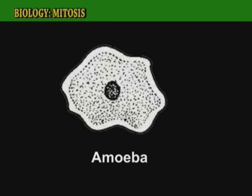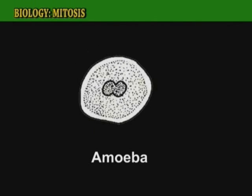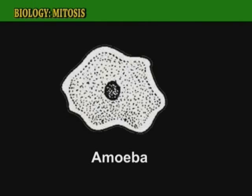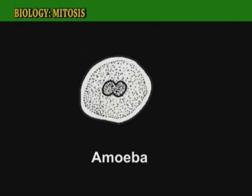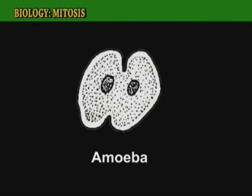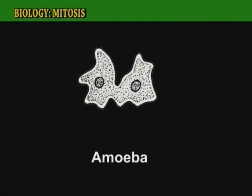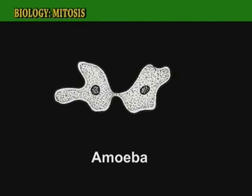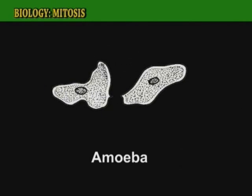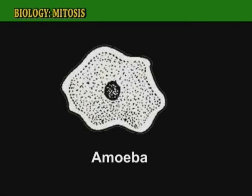For example, an amoeba. When an amoeba is ready to divide, it becomes round and mitosis occurs in the nucleus. After nuclear division, its cytoplasm pinches in and results in two identical daughter cells which grow to full size and repeat the process.